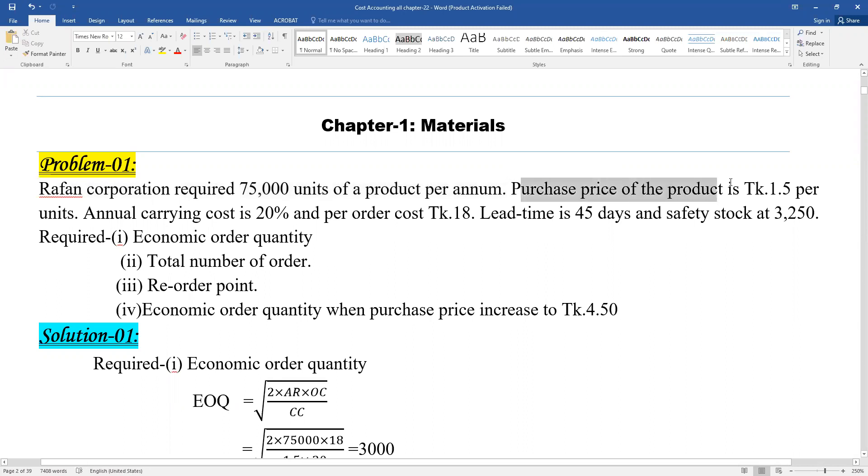Purchase price of the product is Taka 1.5 per unit. Annual carrying cost is 20 percent per order. Cost per order is Taka 18. Lead time is 45 days and safety stock is 3,250 units.